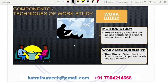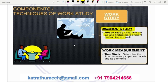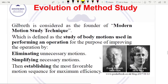There are two main components of work study. First is method study — examine the job and find a more efficient method; that is the best method chosen. That method is the work measurement. Time study is determining the time necessary to perform the job and its elements. The founder of modern method study is Gilbreth.